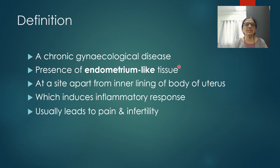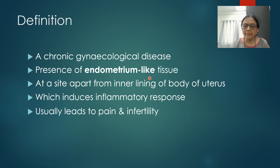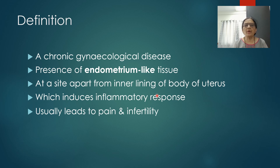Definition of endometriosis: it is a chronic gynecological disease with presence of endometrium-like tissue — not endometrium itself, but endometrium-like tissue — at a site apart from the inner lining of the body of the uterus, which usually induces an inflammatory response and leads to pain and infertility. These first three lines are the important definition of endometriosis.